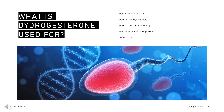Subcutaneous MPA is indicated to prevent pregnancy and manage pain associated with endometriosis. Intramuscular MPA is indicated to prevent pregnancy and at higher concentrations for palliative treatment of endometrial or renal carcinoma.